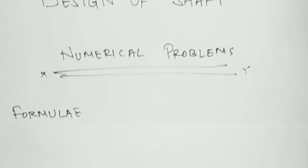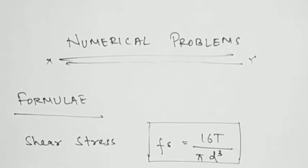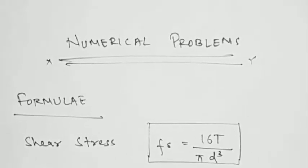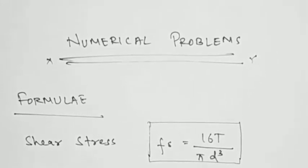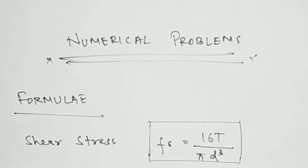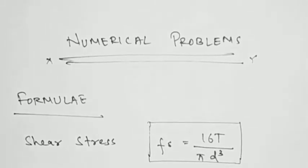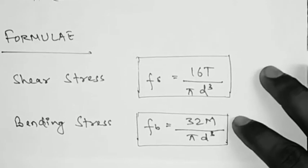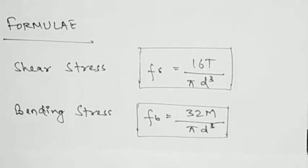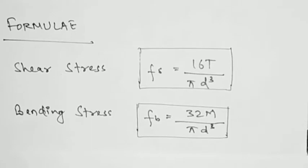There are certain formulas. The first formula is shear stress: FS = 16T / (π D³), where T is the twisting moment and D is the diameter. The next formula is bending stress: FB = 32M / (π D³), where M is the bending moment and D is the diameter.